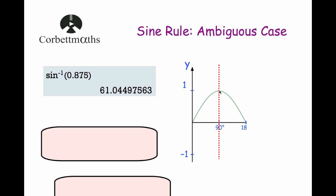There is a second angle between 90 and 180 degrees which will have the same sine. If you were to consider the height of 0.875, there's the angle at 61 degrees, but then there's another angle over here which has got the same sine of 0.875.